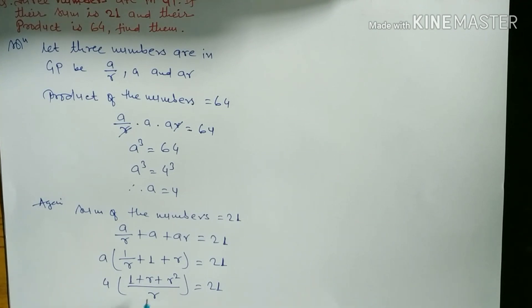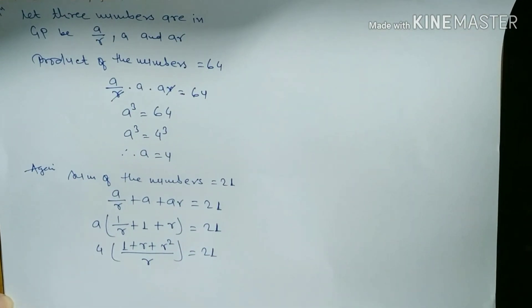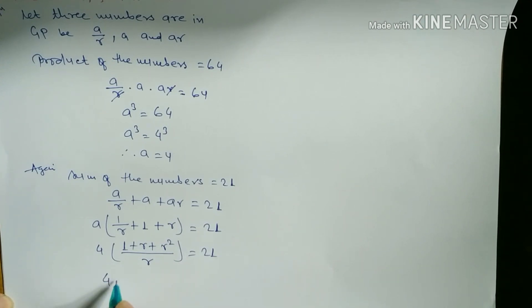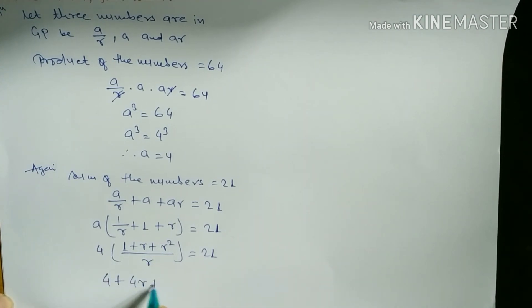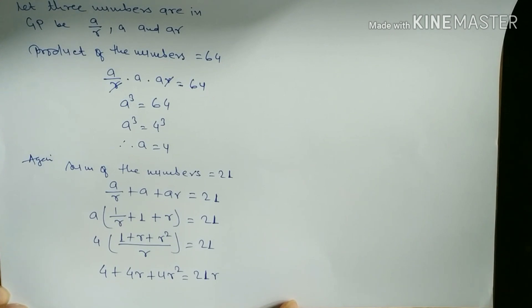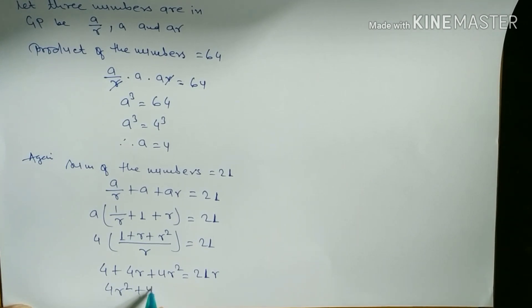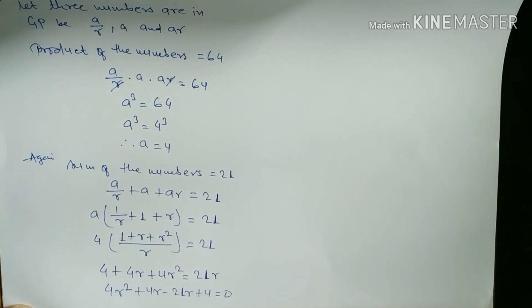Now do cross multiplication: 4(1 + r + r²) = 21r. Expanding: 4 + 4r + 4r² = 21r. Rearranging into the form ax² + bx + c: 4r² + 4r - 21r + 4 = 0.